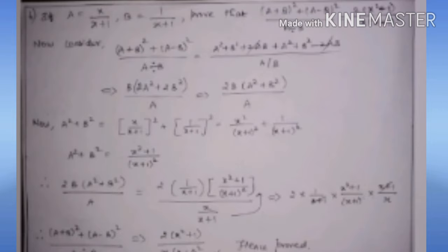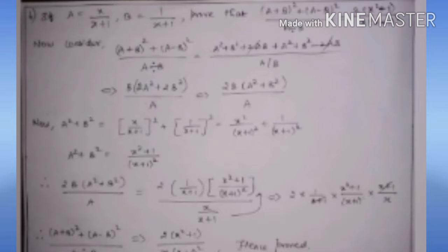We substitute the formula: (A + B)² = A² + B² + 2AB and (A − B)² = A² + B² − 2AB. The 2AB terms cancel, giving 2B(A² + B²)/A. Finding A² + B²: with A = X/(X+1) and B = 1/(X+1), after taking LCM we get (X² + 1)/(X+1)². Substituting into 2B(A² + B²)/A, the denominator X/(X+1) moves to the numerator. After cancelling (X+1) on numerator and denominator, we get 2(X² + 1) / [X(X+1)²], which equals the RHS. The sum is proved.